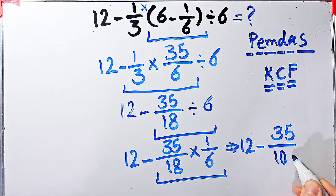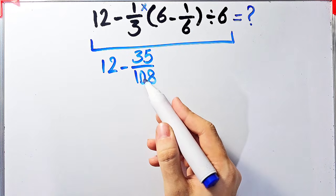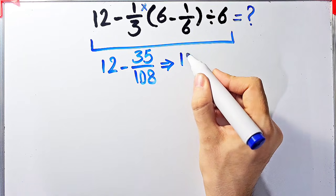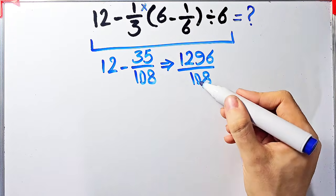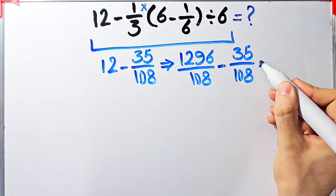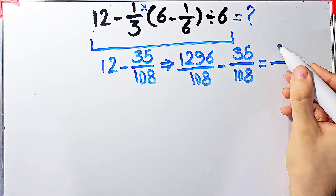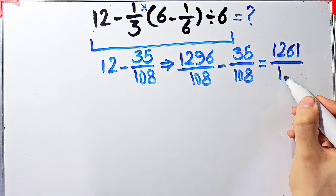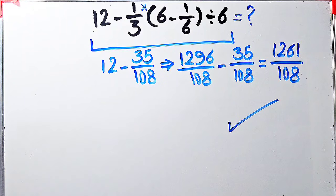Now the question is 12 minus 35/108. Since the denominator is 108, we write 12 as 1296/108. Now we have 1296/108 minus 35/108. The final answer is 1261/108.